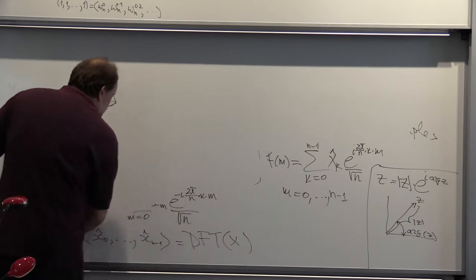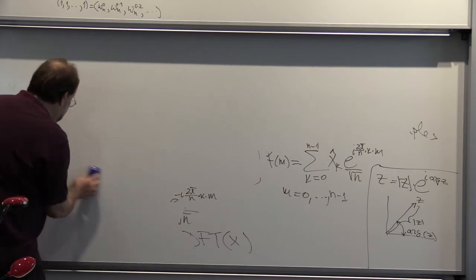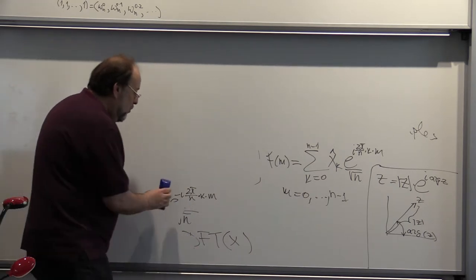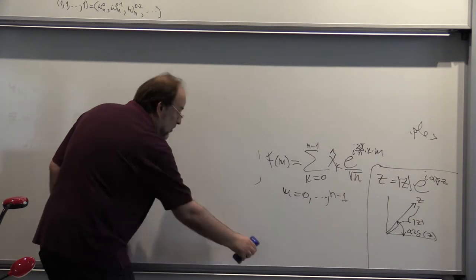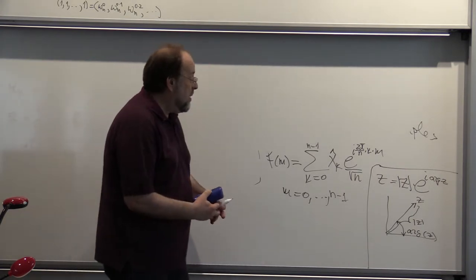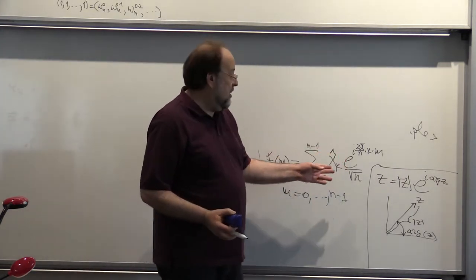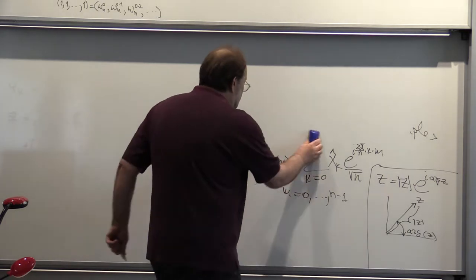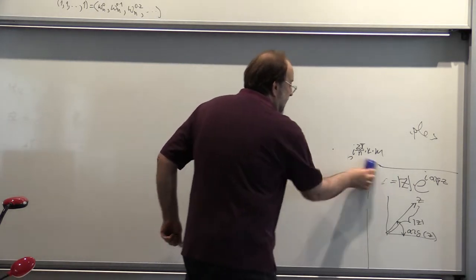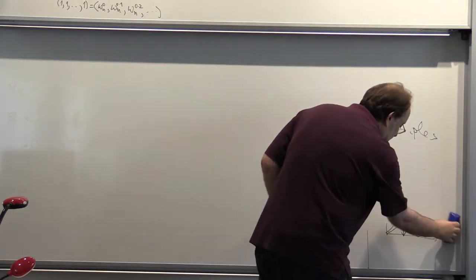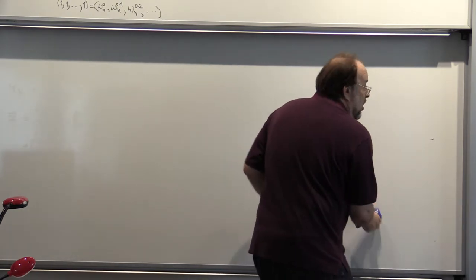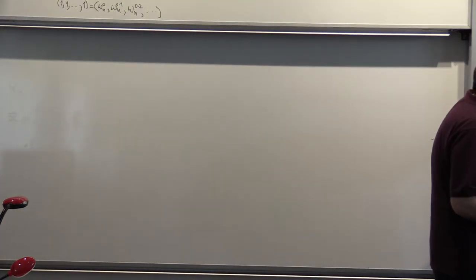You don't have to memorize anything. No formulas need to be memorized. You only have to remember that complex exponentials form an orthonormal basis, and then you simply proceed to compute the projections, and you identify this with precisely this formula.